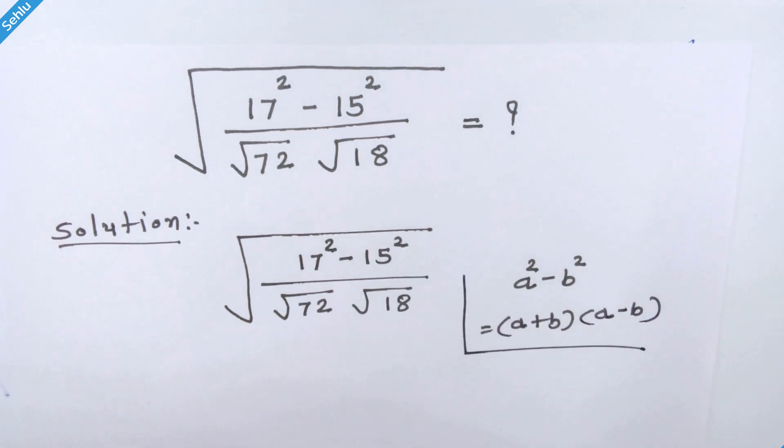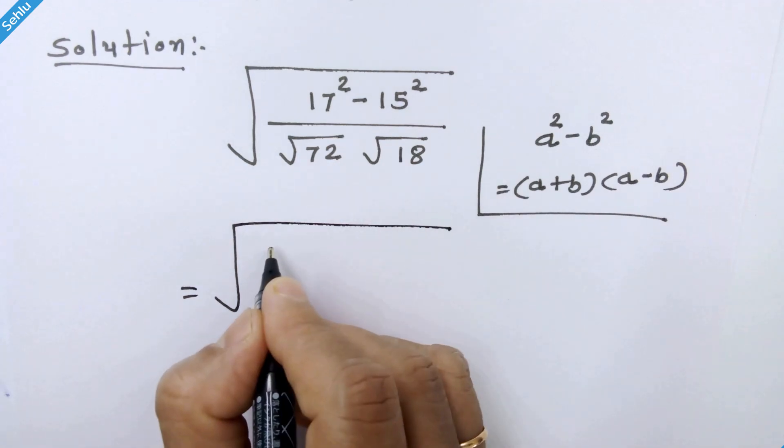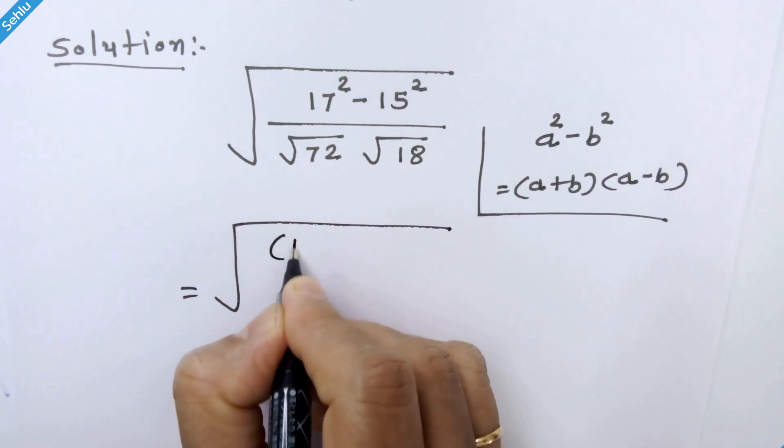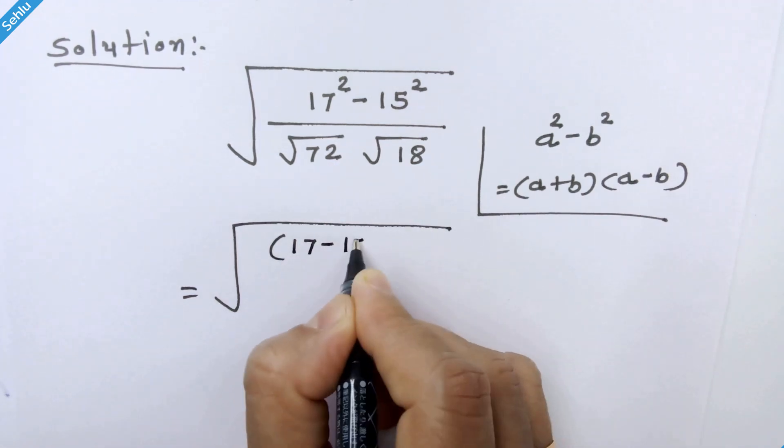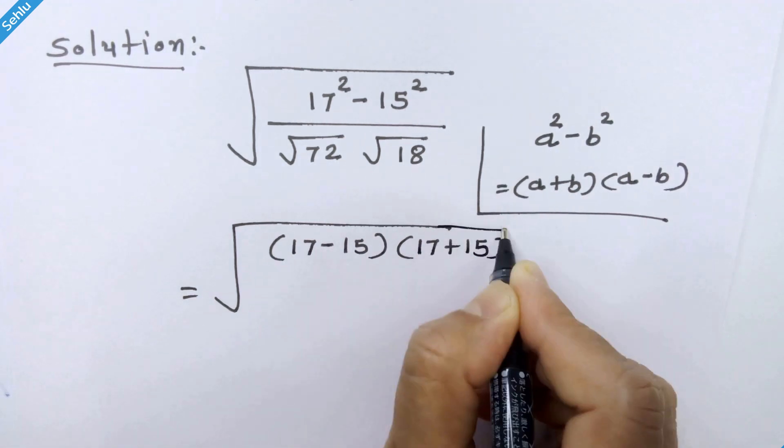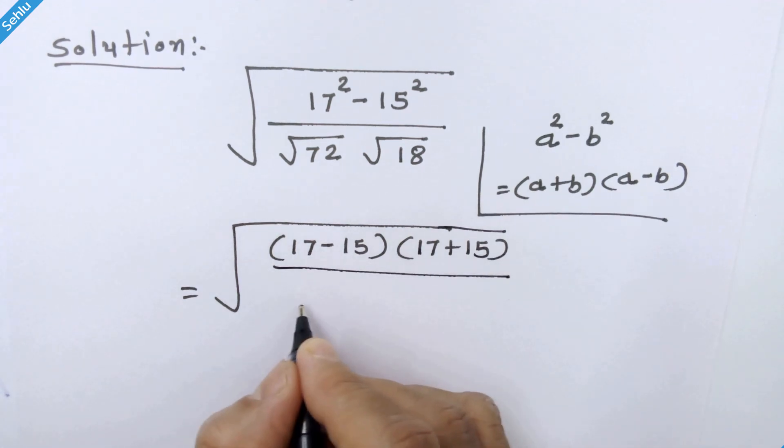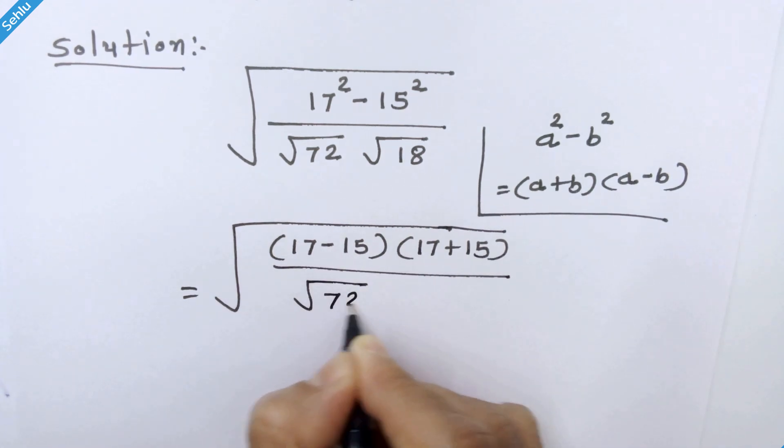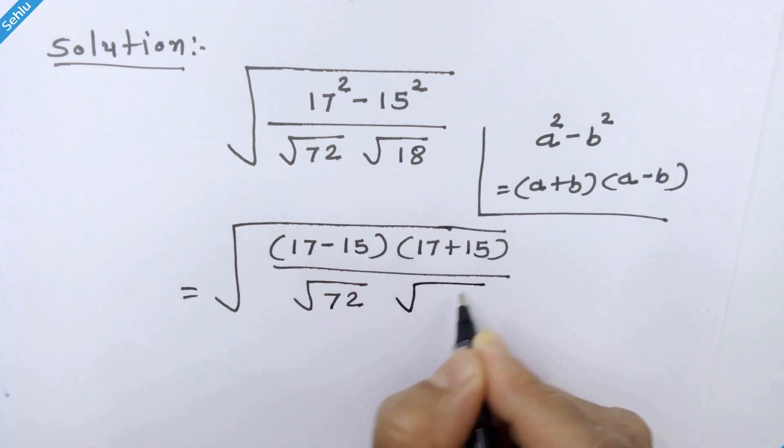So we can write it like 17 minus 15 times 17 plus 15 over square root of 72 times square root of 18.